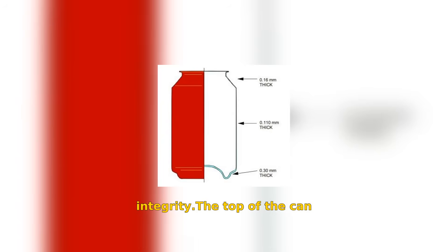The top of the can is not ironed to the same extent and finishes at around 0.16mm thickness. The thicker flange assists the subsequent lid-seaming operation.